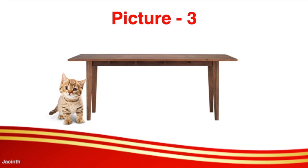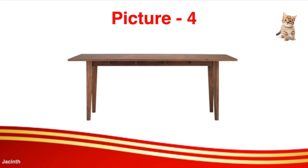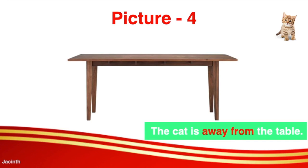Picture number three. The cat now got down from the table. So where is the cat now? The cat is next to the table. This cat is very active — it is not sitting in one place. Now the cat has gone away. The cat is away from the table.